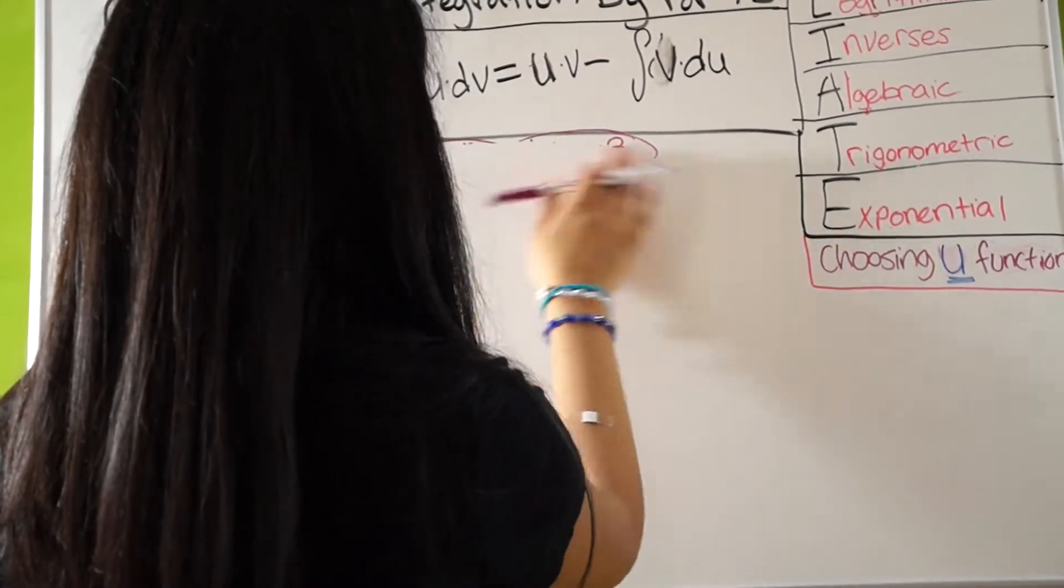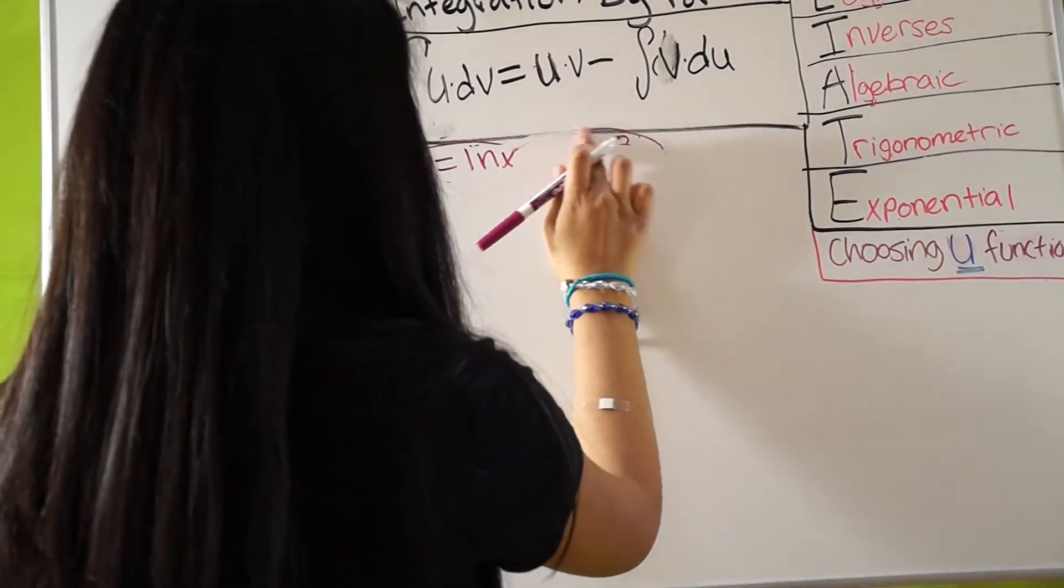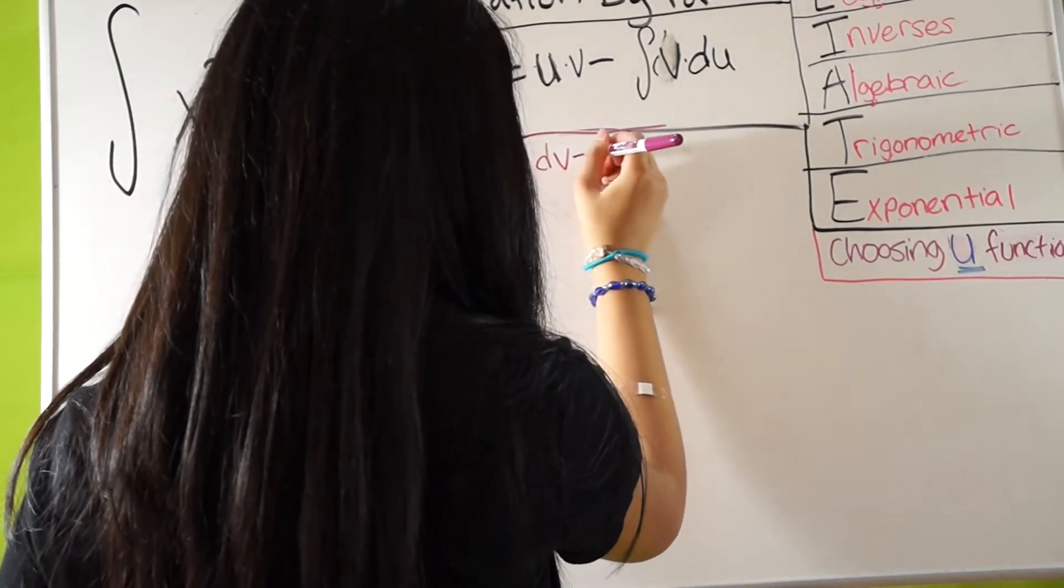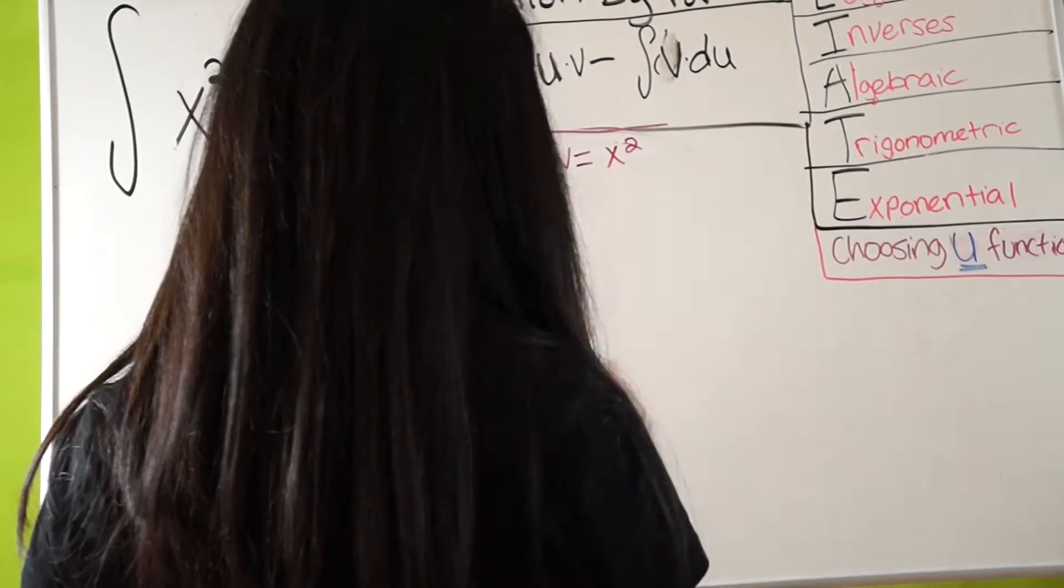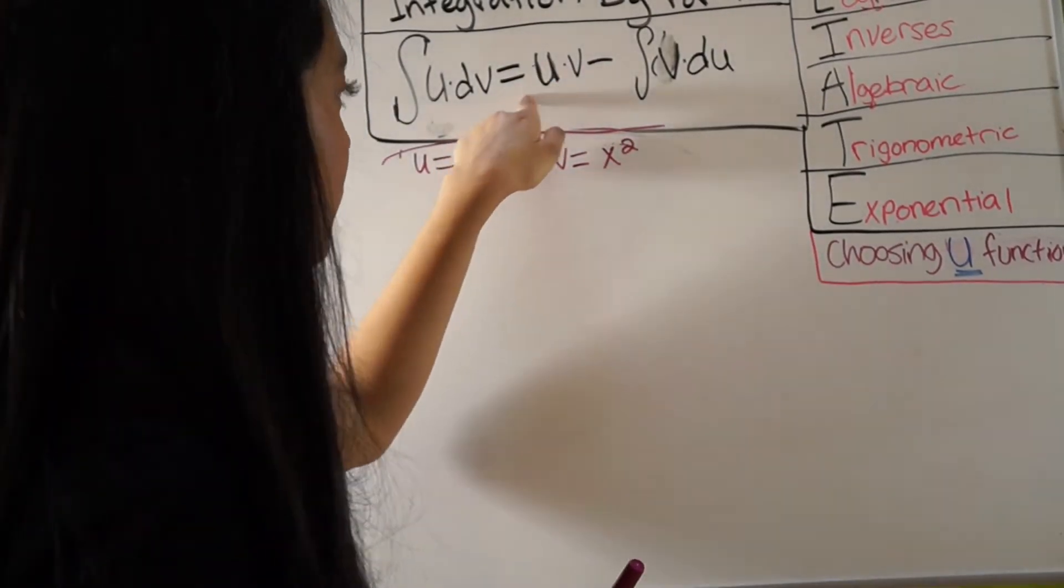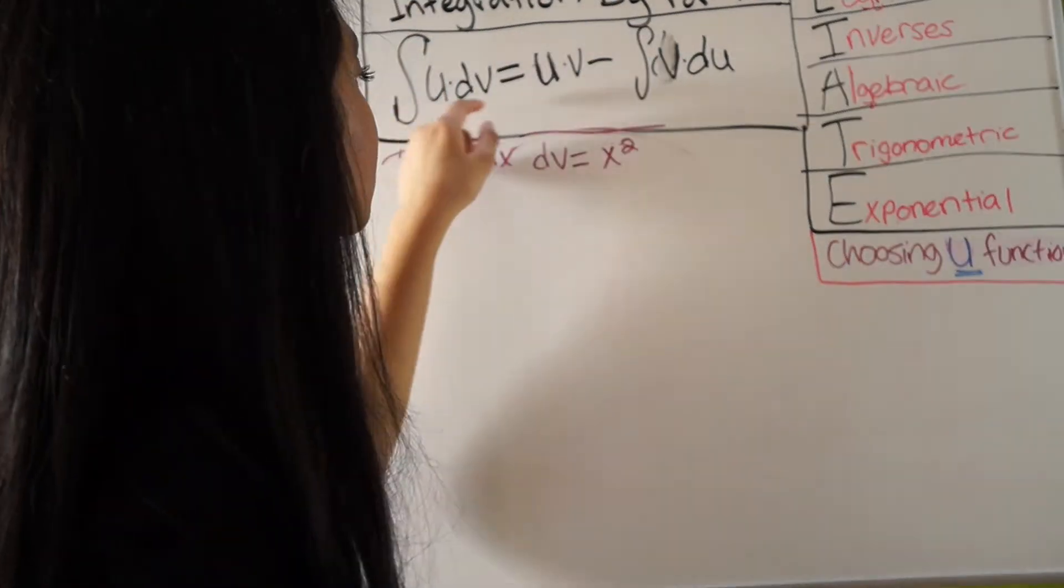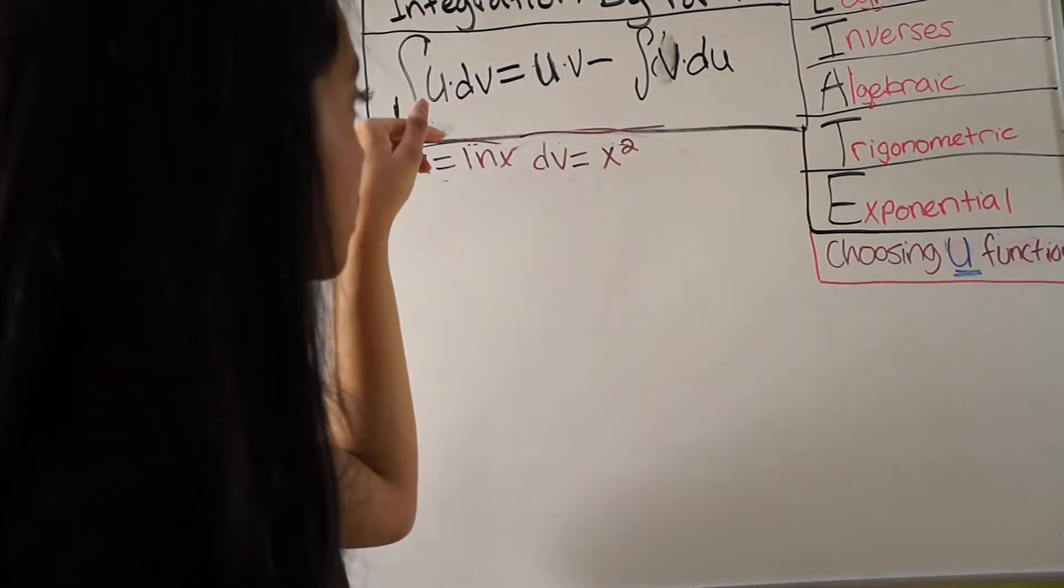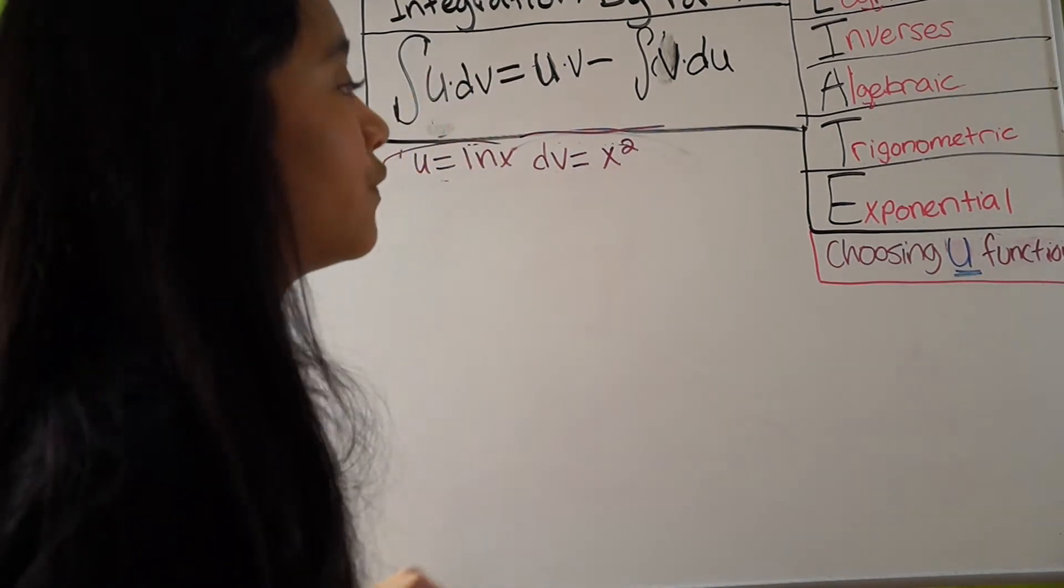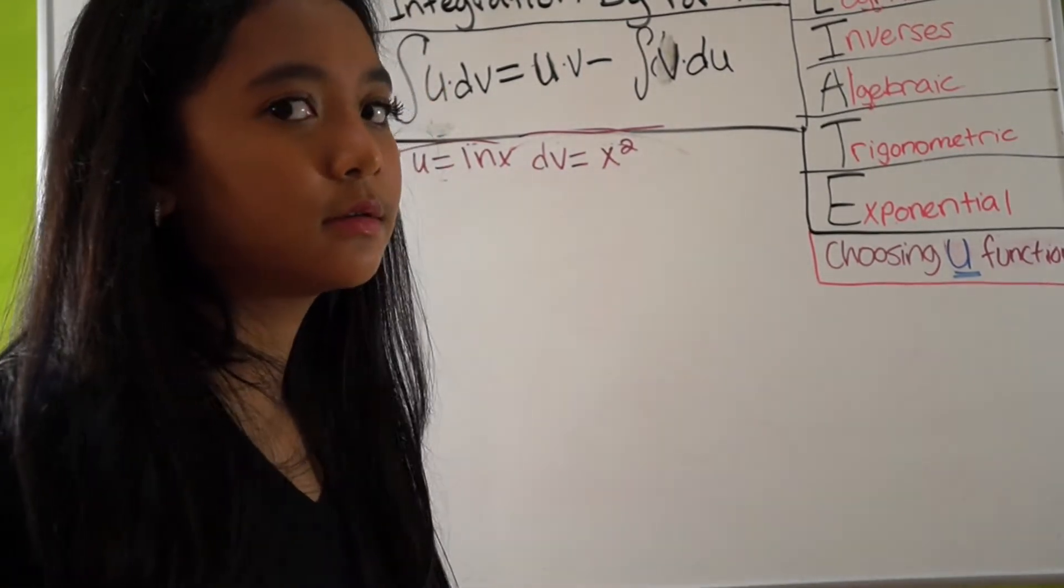Let me just erase this a little better. So, our U is ln x, and our DV is x squared. So, now, as you can see here, the integration by parts, the formula for it is the integral of U dot DV equaling U dot V minus the integral of V dot DU.